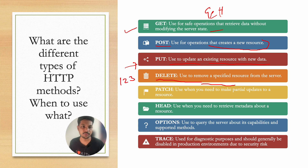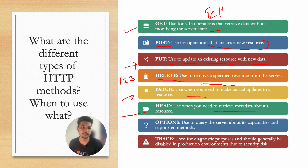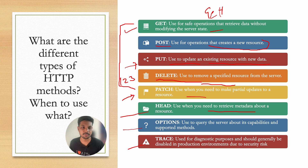DELETE is used to delete a resource from the server — you pass in an identifier like an ID and it deletes that resource. PATCH is used when you need to make partial updates to a resource. HEAD is used when you need to retrieve metadata about a resource. In typical project implementations we mostly use GET, POST, PUT, DELETE, and PATCH. HEAD, OPTIONS, and TRACE are used in rare cases, but take some time to read about them as well.